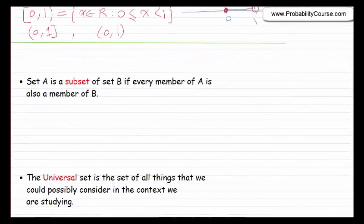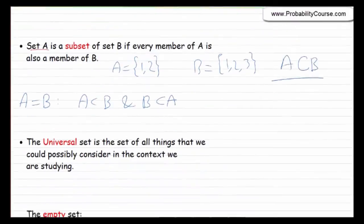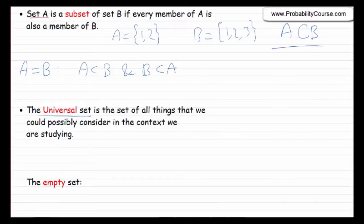Now let's talk about subsets. Set A is a subset of set B if every element of A is an element of B. So if A is {1, 2} and B is {1, 2, 3}, then A is a subset of B. Two sets are equal if A is a subset of B and B is a subset of A, meaning they have the same elements. Another interesting concept is the universal set — the set of everything we consider in a problem. In probability, we usually show the universal set by S because it is the sample space. Some people show it by omega.